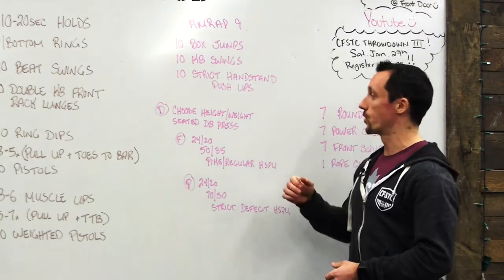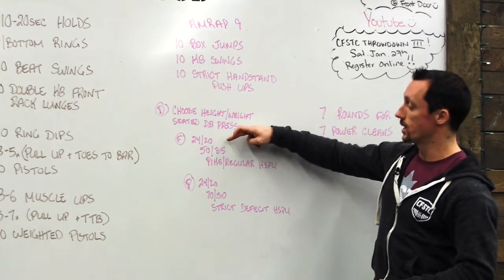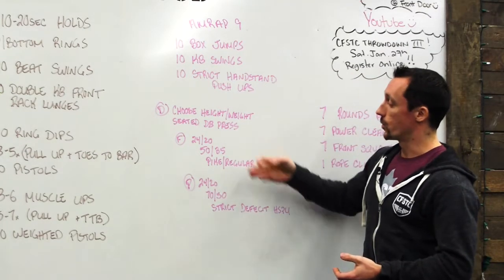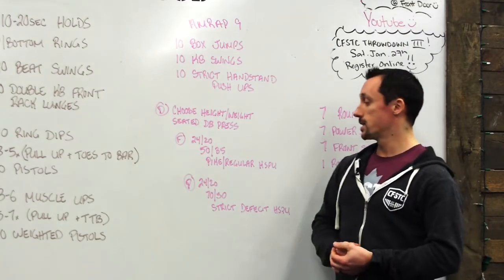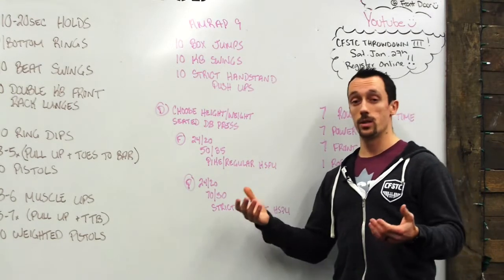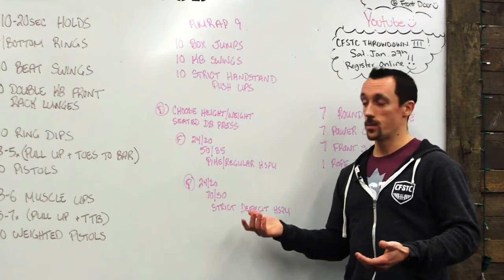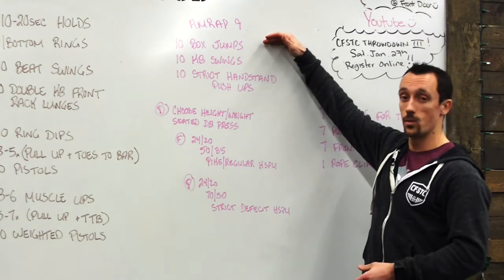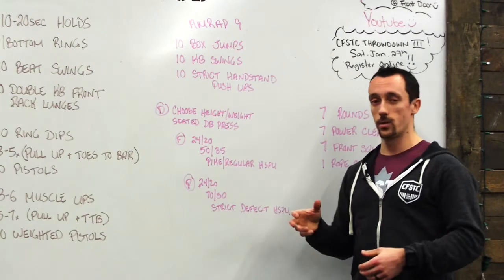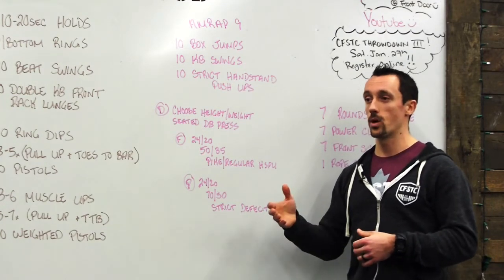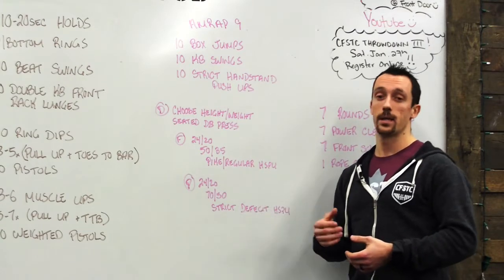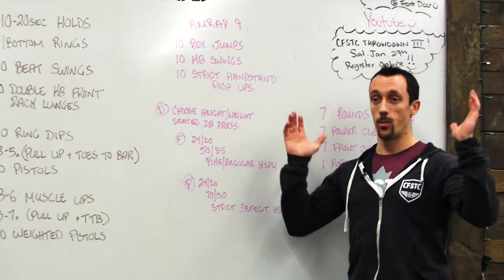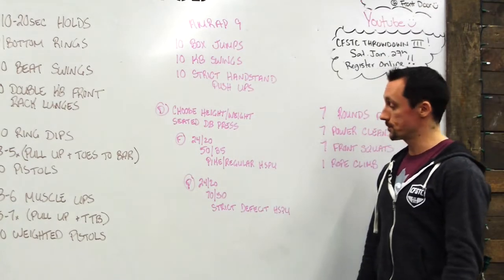In the fitness stream, the guidelines are: box jump at 24 inches for men, 20 inches for women; kettlebell at 50 pounds for men, 35 pounds for women. For handstand push-ups you can choose either a pike handstand push-up or a regular handstand push-up against the wall. You have to be smart about your capability — if you're only getting one or two reps at a time against the wall, the pike option lets you maintain the stimulus of being upside down and pressing.